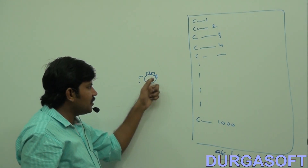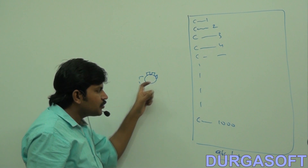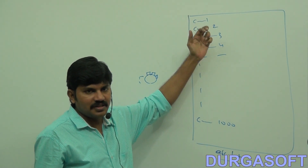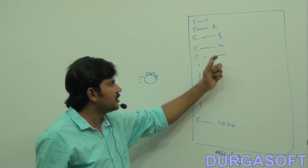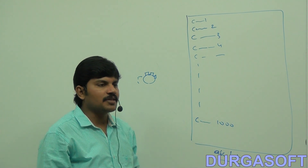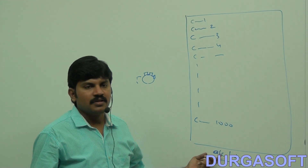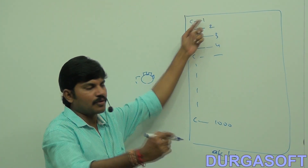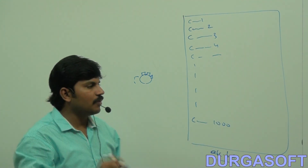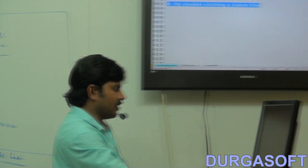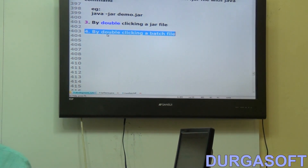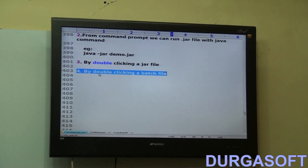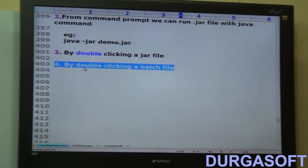If I click this batch file, it will open a command prompt and execute the first command, then the second command, then the third command, the fourth command, and so on. All thousand commands will be executed automatically. So if you want to run a Java program, just keep the relevant Java command in the batch file — for example 'java JarDemo'. A batch file is nothing but a group of commands that execute sequentially when double-clicked.